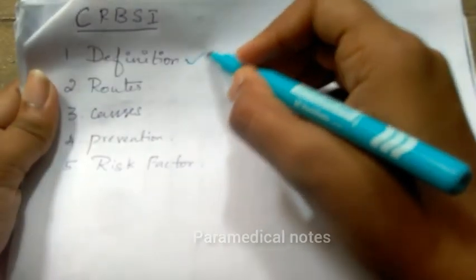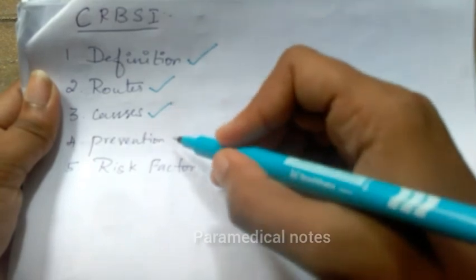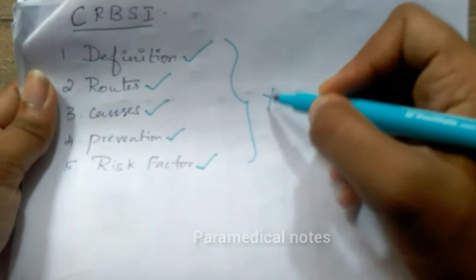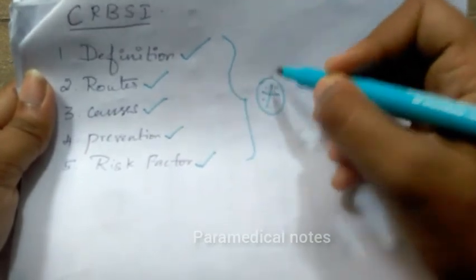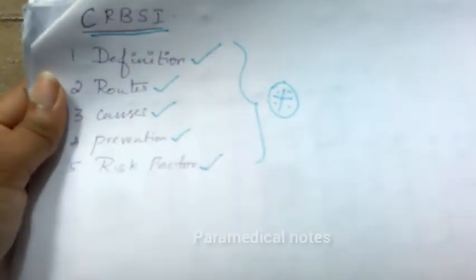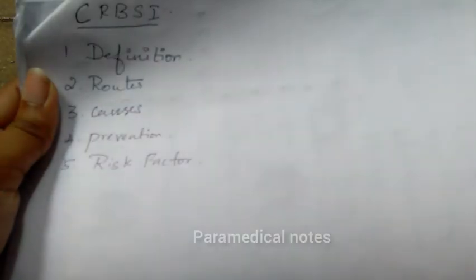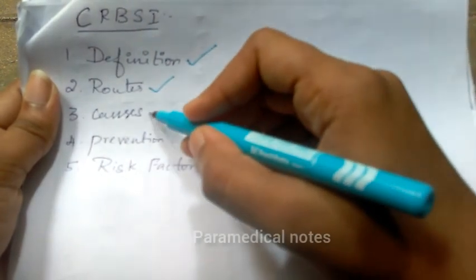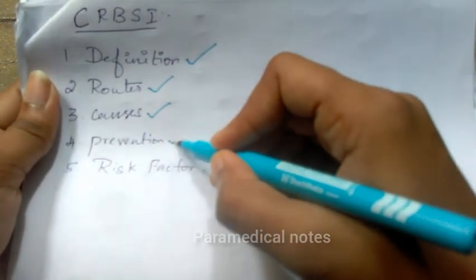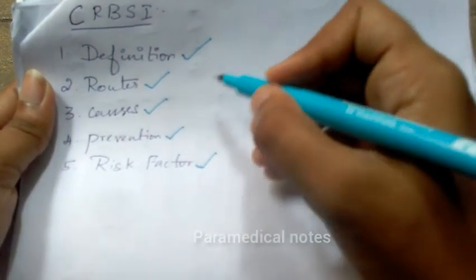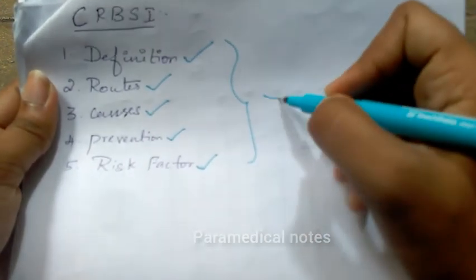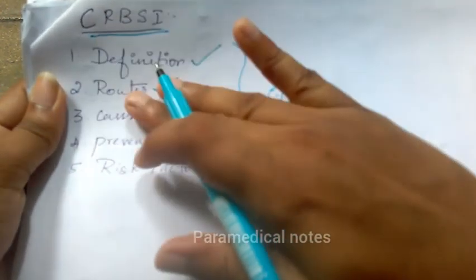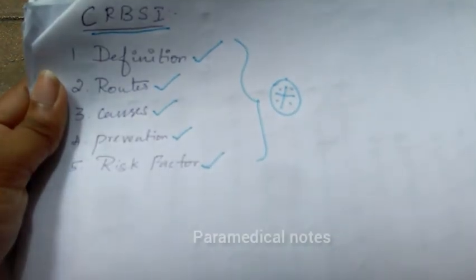To revise for the catheter-related bloodstream infection question, we must write five points: definition, routes, causative organisms, prevention, and finally risk factors. Please revise these for the exam. If you understood my notes, please comment, like, share, and subscribe. Thank you so much.